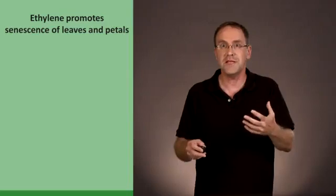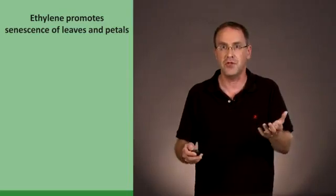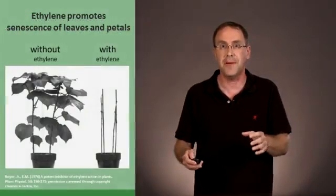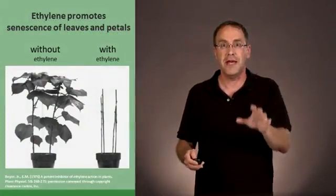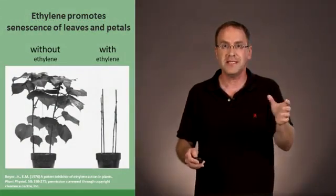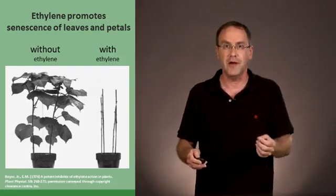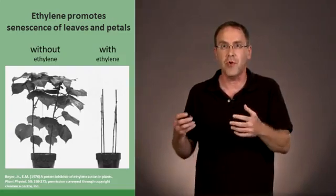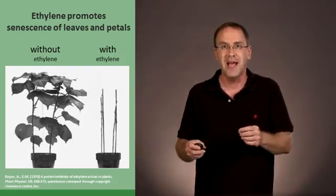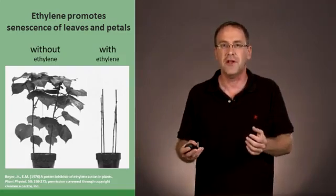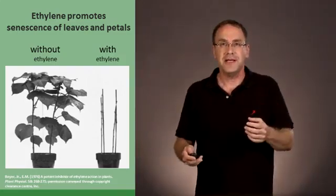Senescence is when the leaves age and fall off the tree or the plant. For example, what we see here is cotton plants, that the one on this side has been kept in normal air. The one on the other side has been put in air where ethylene has been pumped into its box. As you can see, all of its leaves have fallen off, which shows how ethylene can induce senescence.